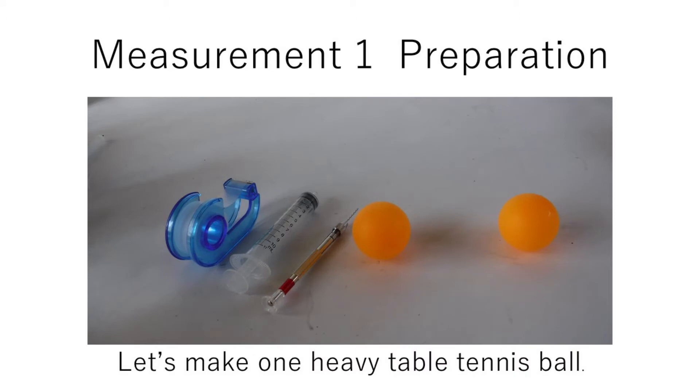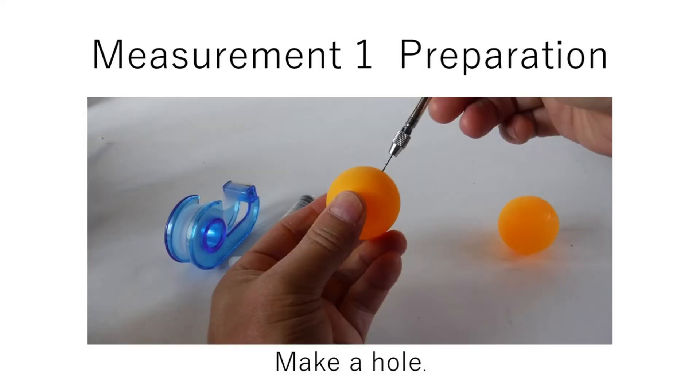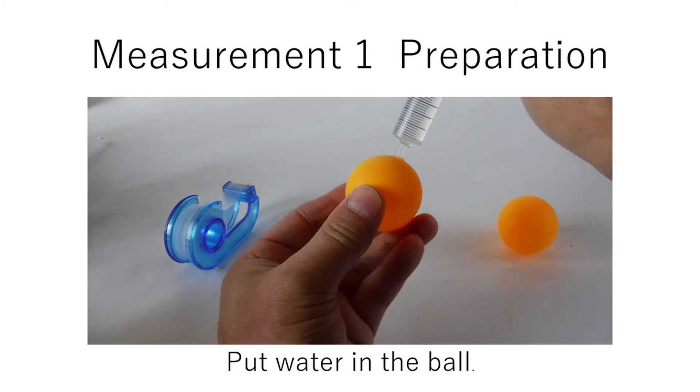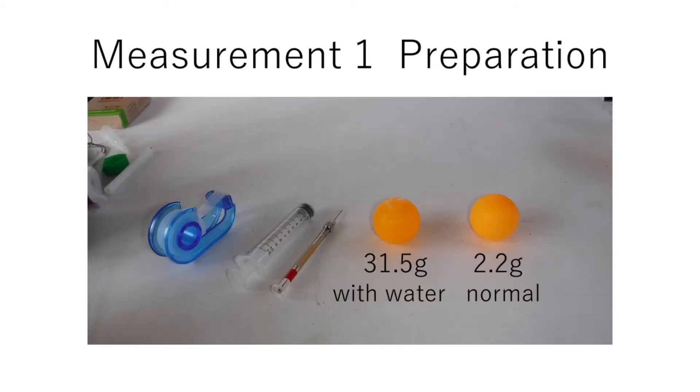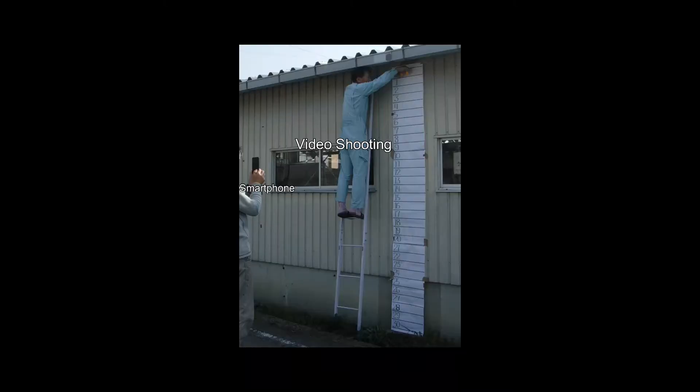Preparation for the first measurement. Two balls with different mass are needed. Make a hole in one ball and put water in it. Two balls are ready. The free fall of two balls is recorded by smartphone.